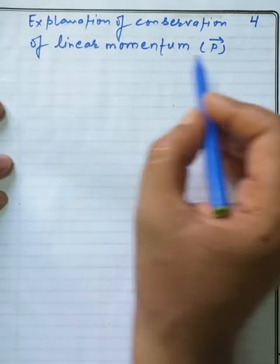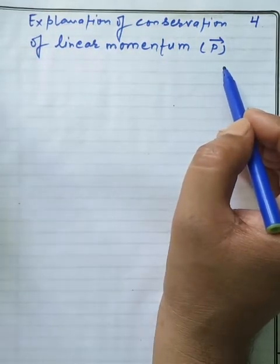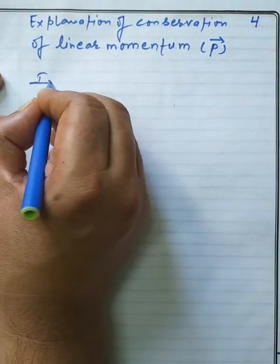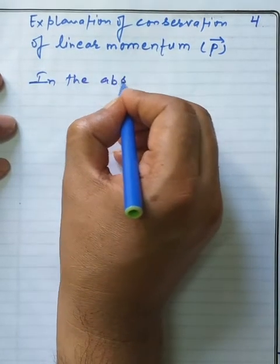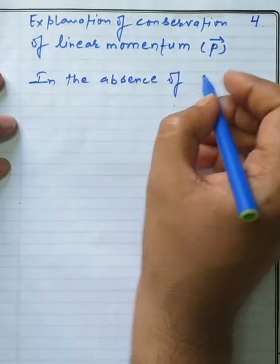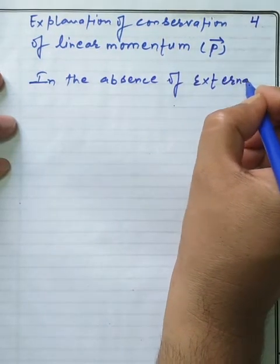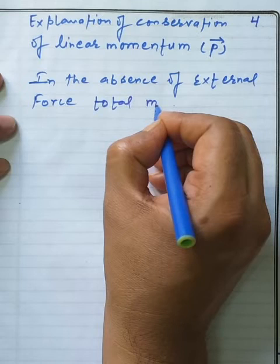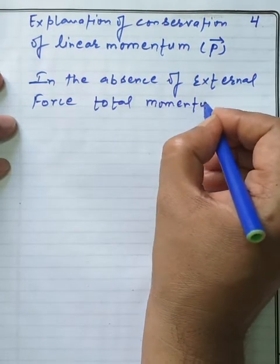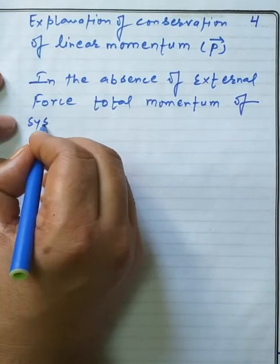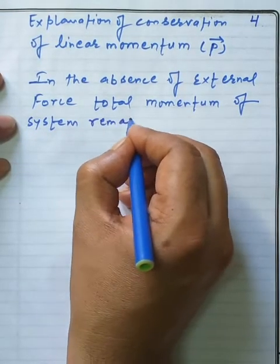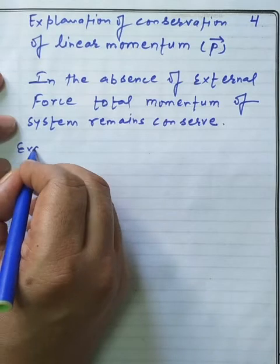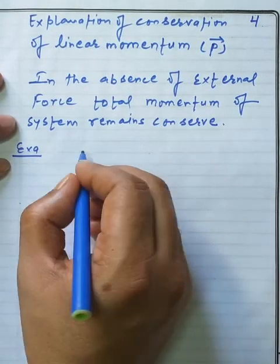Now we have the explanation of the conservation of linear momentum. In ninth class we discussed this briefly. The statement is: in the absence of external force, the total momentum of the system remains conserved. For example, we are imagining a collision.